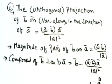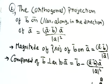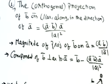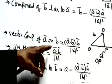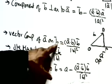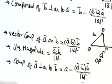Similarly, projection of a on b: vector component of a on b = (a·b / |b|²) · b, and its magnitude = a·b / |b|. Component of a perpendicular to b = a − (a·b/|b|²) · b. You must memorize these formulas.